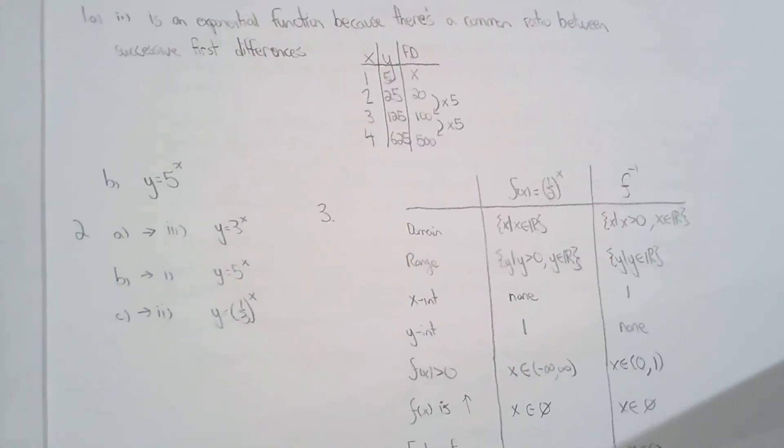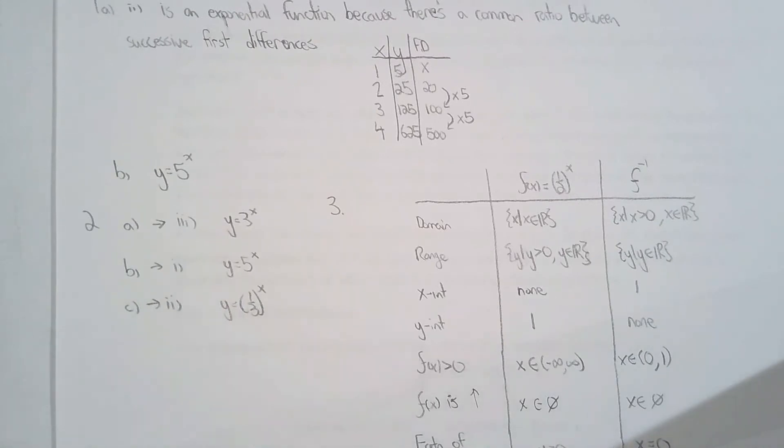For question 2, match the graph with its inverse. The easiest one is C. Matching C has to be graph number 2 because C is an exponential decay function. I was looking for a logarithmic function decreasing over its domain, and 2 is the only choice because A and B are exponential growth.